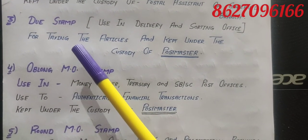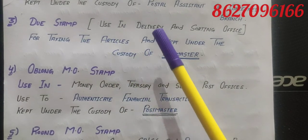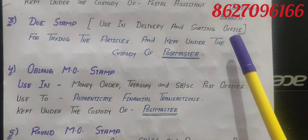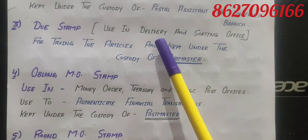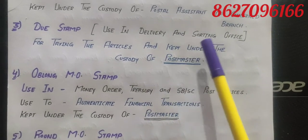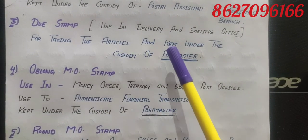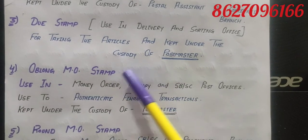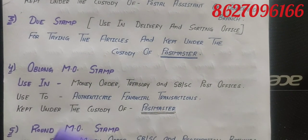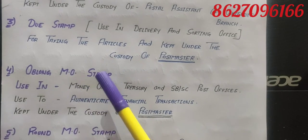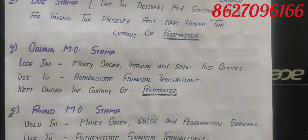The due stamp is used in delivery and sorting offices. It is used for taxing articles — those articles on which all posted stamps are not there. It is used for taxing such articles. The due stamp is kept under the custody of the Postmaster.